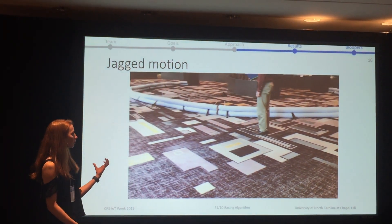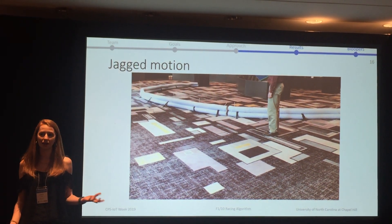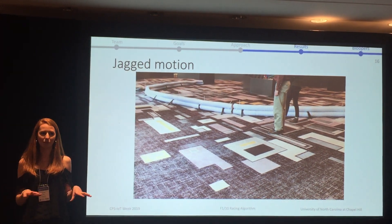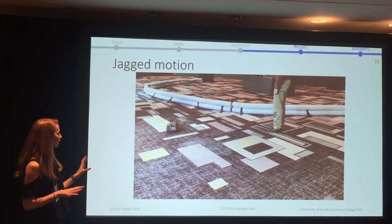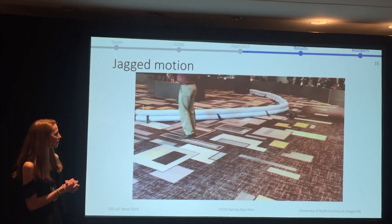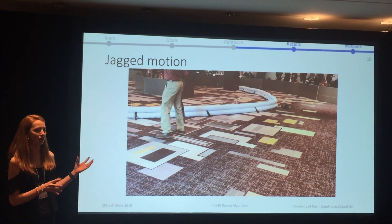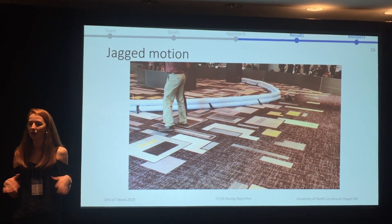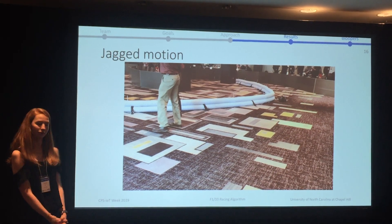Another thing we noticed is that our robot has a little bit of a jagged motion — some people might say it looks like a drunk driver sometimes. I definitely think there's a lot of optimization that can go into the smoothing of the path that it takes.